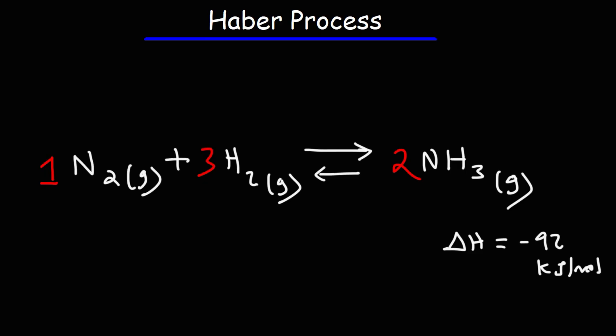When one mole of nitrogen reacts with three moles of hydrogen gas to produce two moles of ammonia, 92 kilojoules of thermal energy will be released. Now if we increase the temperature of this reaction, will the reaction shift to the right or to the left? Whenever you have an exothermic reaction, if you increase the temperature, the reaction is going to shift to the left, which will decrease the yield of ammonia.